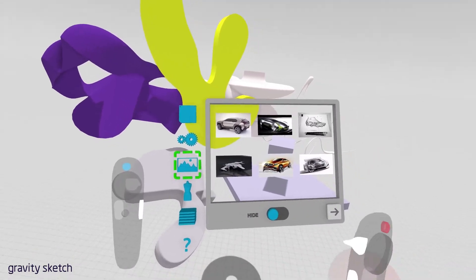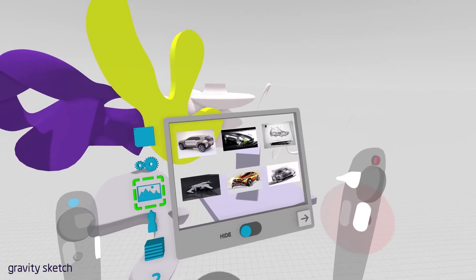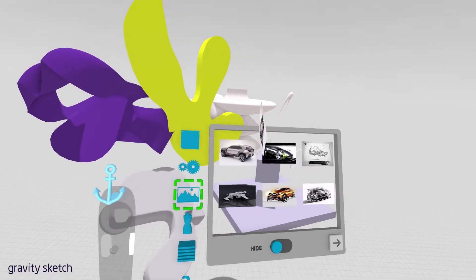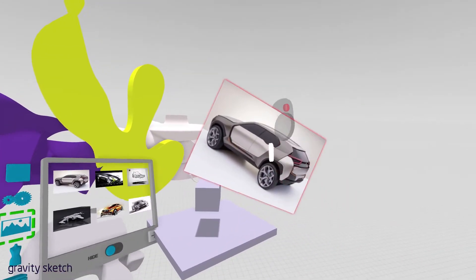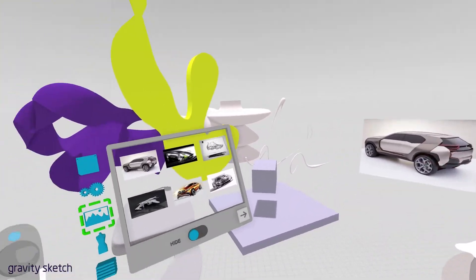You can bring in 2D images the same way that you grab everything else in the application. You'll insert the, intersect the image, grab it, and scale it up. And you can put it into your environment.